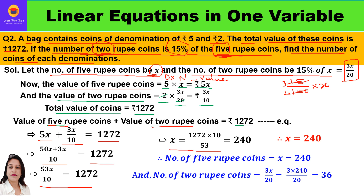So 53x upon 10 equals 1272. Cross-multiplying, x equals 1272 times 10 divided by 53, which equals 240. So x equals 240, and x was the number of 5-rupee coins. The number of 2-rupee coins is 3x by 20, so 3 times 240 divided by 20 gives 36. So the number of 2-rupee coins is 36.